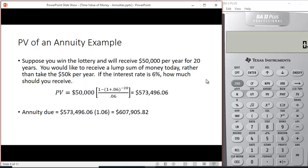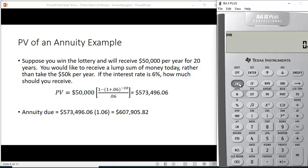Suppose you win the lottery and you receive $50,000 per year for 20 years. You'd like to receive a lump sum of money today rather than take the $50,000 per year. If the interest rate is 6%, how much should you receive? We want to calculate the present value. We can use the formula, but let me use the financial calculator, which actually has this already programmed into it. This happens to be the TI BA2+. To clear these time value of money function keys, we hit 2nd, clear TVM. Then we put in the information.